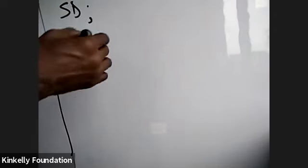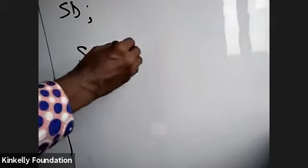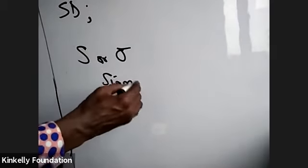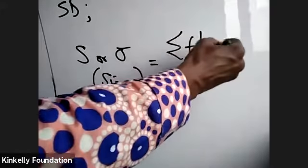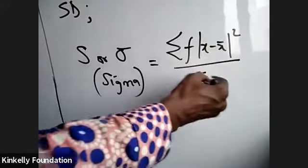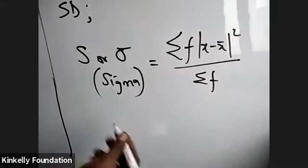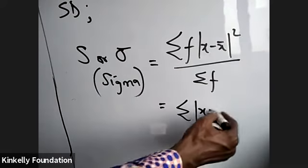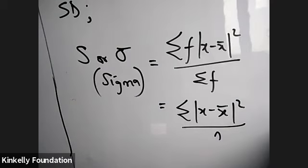For standard deviation (SD), it can be represented with capital S or sigma. The formula is the square root of summation f times (x minus x-bar) squared, all over summation f. If it doesn't have frequency, it is summation of (x minus x-bar) squared all over n.